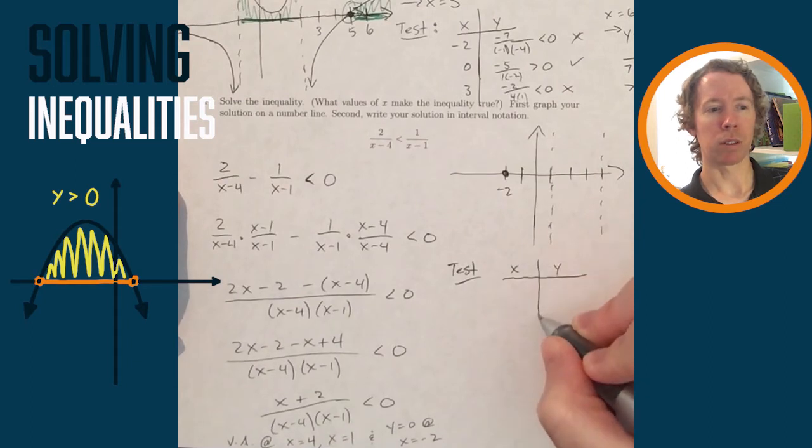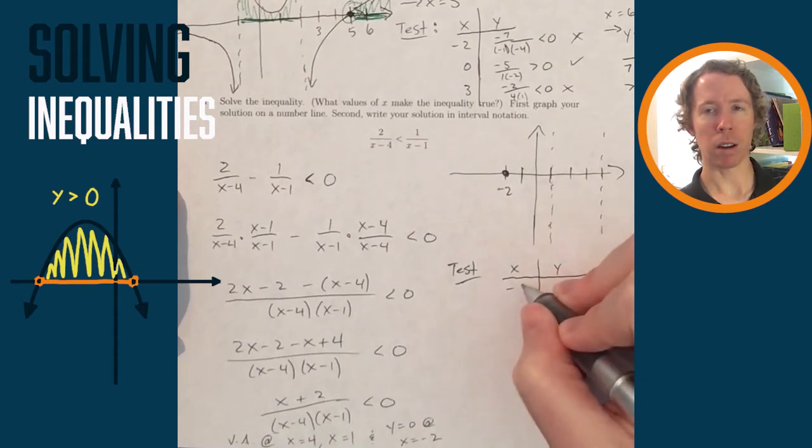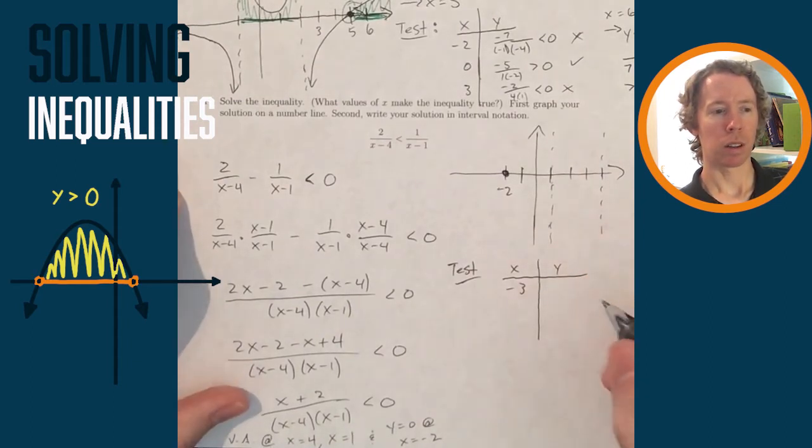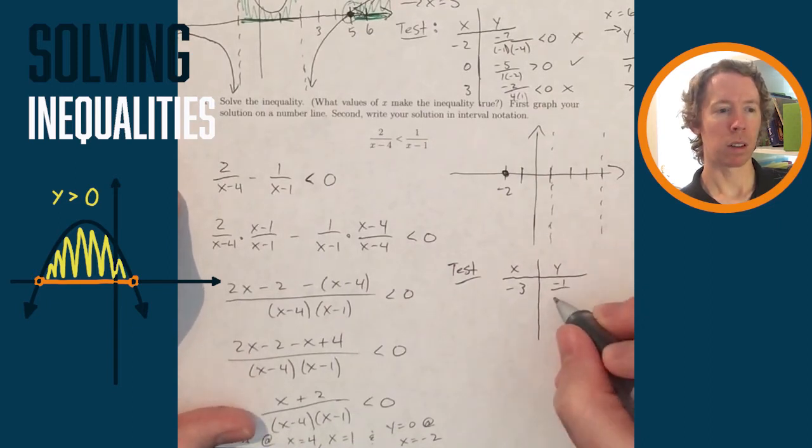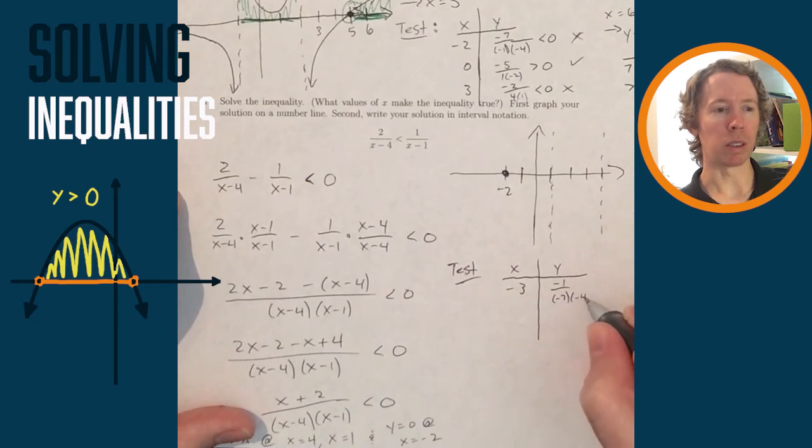So to the left of negative 2, I need to grab an x value from there, grab negative 3, plug it in, see if my y value is positive or negative. And then I'll do the same thing for each of these other pieces.